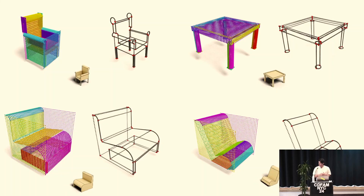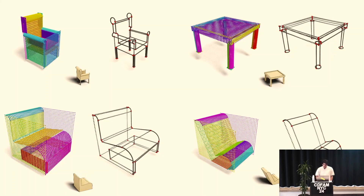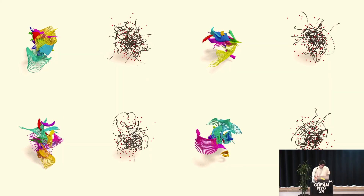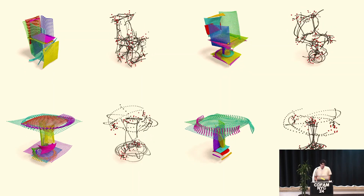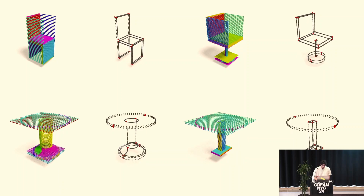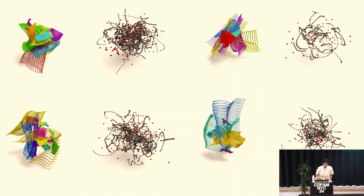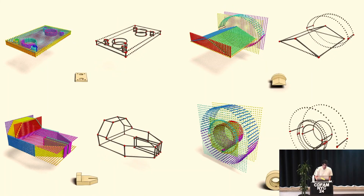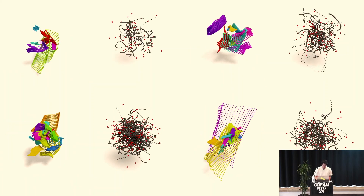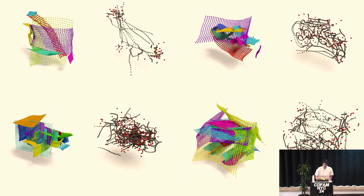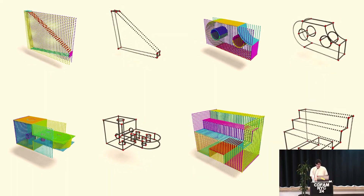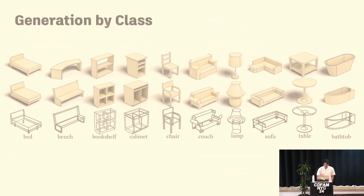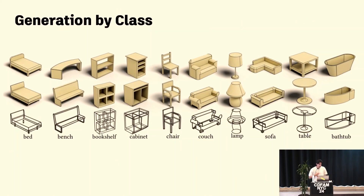Looking at results: on the left-hand columns you see the denoising process for the surfaces and on the right-hand columns the denoising process for the edges. This is trained on a furniture dataset, and the spinning shapes are reconstructions of those solid models. All we're asking the neural network to do here is give us a random shape, and these prismatic mechanical CAD shapes are the type of thing it creates.